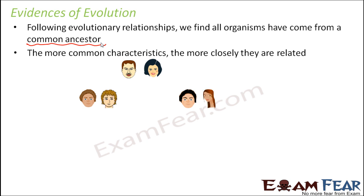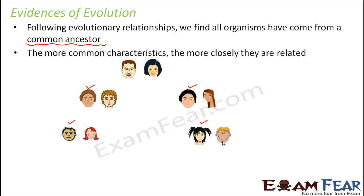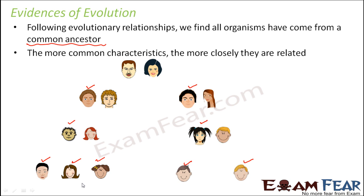Now these two kids get married to two different ladies and have their own kids. If you compare one cousin with another, you see they do not share as many similarities as brothers do. That's because they are cousins — they do not share the same parents, but they share the same grandparents. Since their parents share some common traits and they have the same grandparents, a little bit of similarity might still be there.